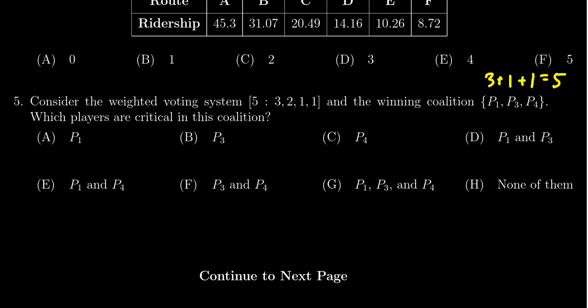And since players one, three, and four each have at least one vote to their name, if we lose any one of them, it'll be a losing coalition. This tells us that all three players are in fact critical players. So the correct answer is G, player one, three, and four are all critical players.